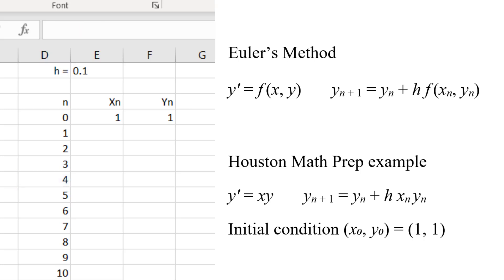Now we fill in the next column. We want the value of x to increase by the increment of h each time. So in this cell, we type an equals sign, then select the cell above, then type a plus sign, and finally select the cell containing the increment, 0.1.